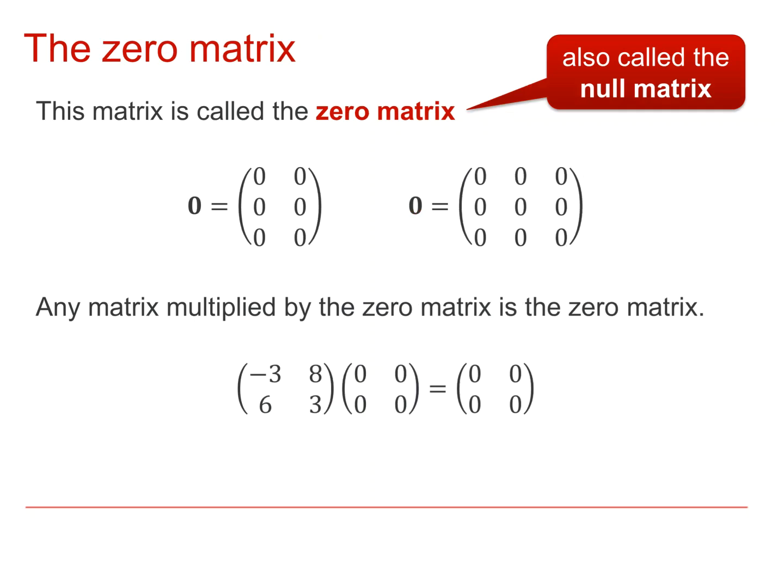The second matrix was a zero matrix, also called a null matrix. And again, these can happen in different sizes, but they don't need to be square. Any matrix multiplied by a zero matrix gives another zero matrix, although it may not be the same shape and size.